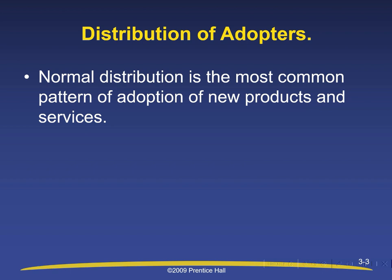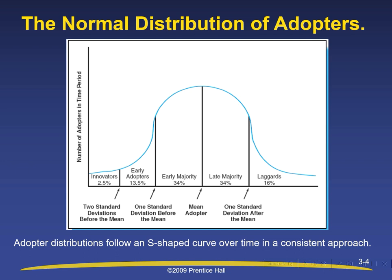Distribution of Adopters: the normal distribution is the most common pattern of adoption of new products and services. Adopter distributions follow an S-shaped curve over time. Looking at the diagram, the Y-axis shows the number of adopters in a time period, and the X-axis shows different categories of innovators with percentages of 2.5%, 13.5%, 34%, 34%, and 16%. The normal distribution of adopters follows the S-shaped curve.